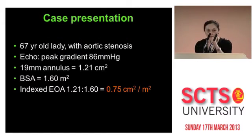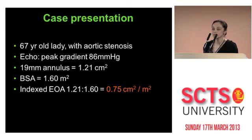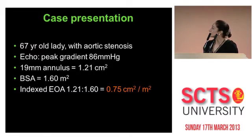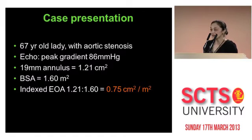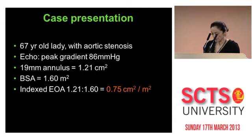I'd like to start by presenting a case of a 67-year-old lady with a diagnosis of aortic stenosis. Her transthoracic echo gradient was 86 millimeters. Echocardiographic measurement of the annulus was around 19 millimeters. Her body surface area was 1.6, which gives you an index of about 0.75.